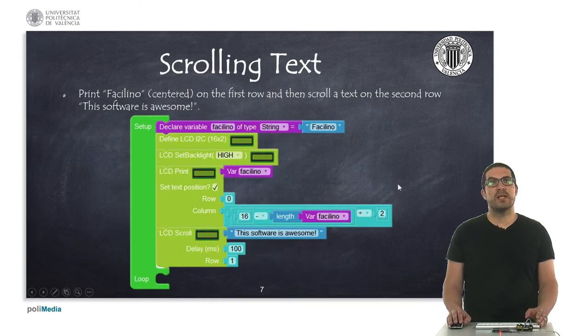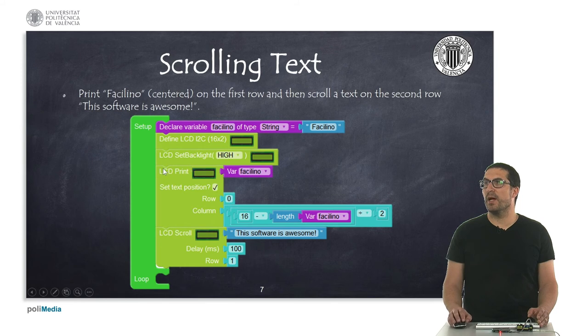And then in this last example, what we are going to see is we are displaying on the first row the word Facilino, so this is a static text. But then on the second row, on row one, we are scrolling a text which is just saying this software is awesome, and we have a specific delay.